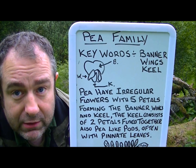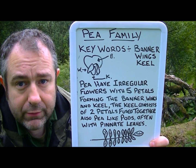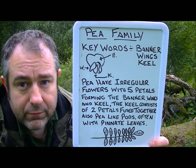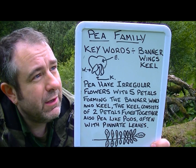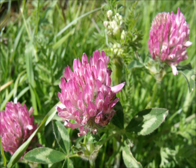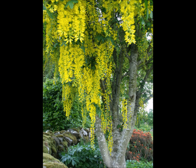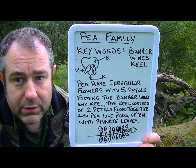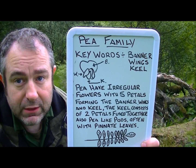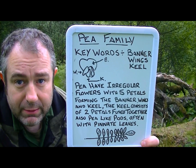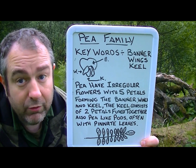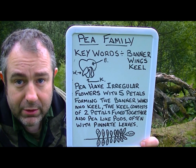Worldwide, there are 13,000 species of pea. So once again, the keywords are banner, wings, and a keel. That's it — simple as, just like the mustard family, very simple. Remember those keywords: when you see a flower and it has a banner, two wings, and a keel of the boat, you know you have a member of the pea family.